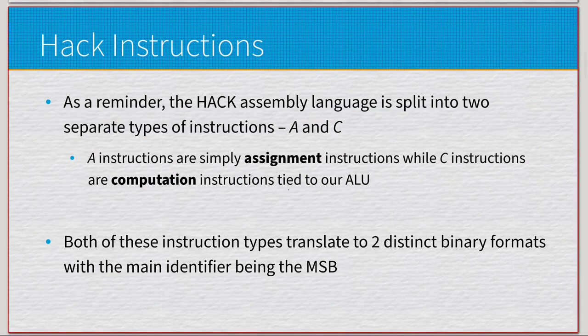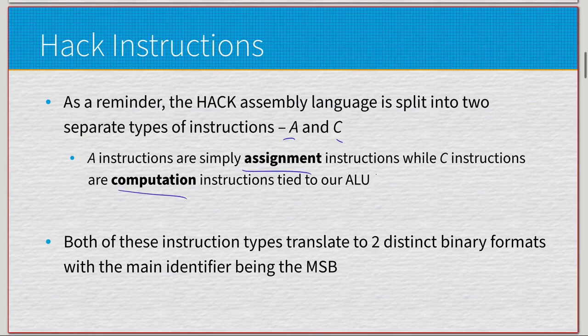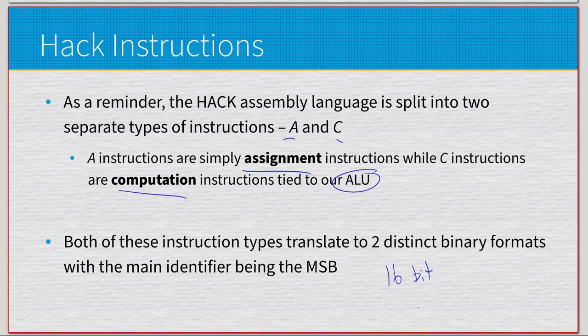As a reminder, we have two types of instructions. We have A instructions, very simple assignments, and C instructions, computations tied to our ALU. So that's all the actual arithmetic computation that our system does. Both of these instruction types will be translated to 16-bit values. Because we have a 16-bit data computer, the main identifier in this 16-bit string is going to be the most significant bit, the leftmost bit. That will dictate if we are doing an assignment instruction or a computation instruction.